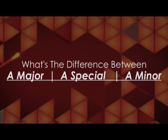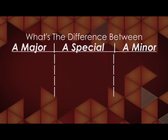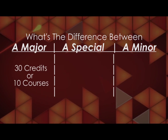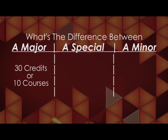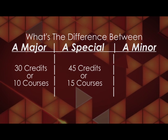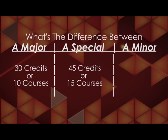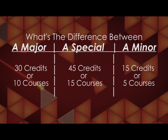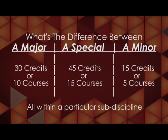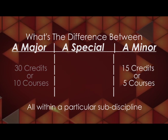What is the difference between a major, a special, and a minor? A student is considered to have completed a major if they have completed 30 credits or 10 courses within a particular subdiscipline. A special requires 45 credits or 15 courses within a subdiscipline. A minor is when a student has completed 15 credits, equivalent to 5 courses, within a particular subdiscipline. Please check your faculty booklet to ensure you are completing the correct suite of courses.